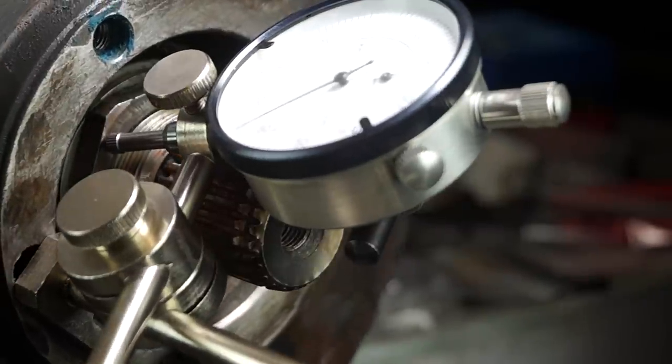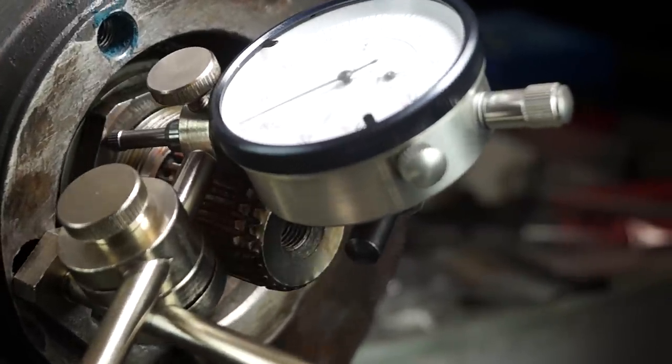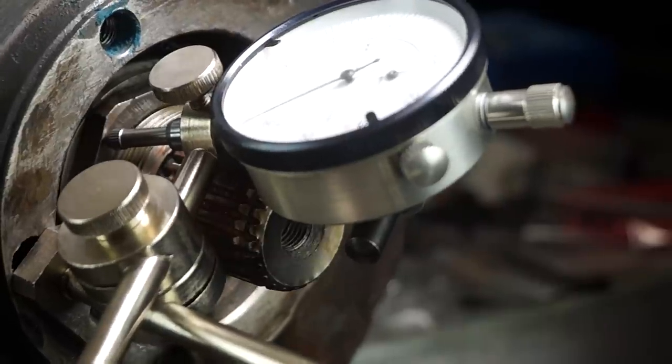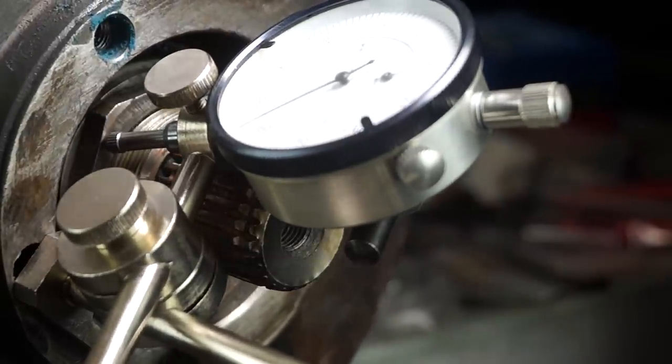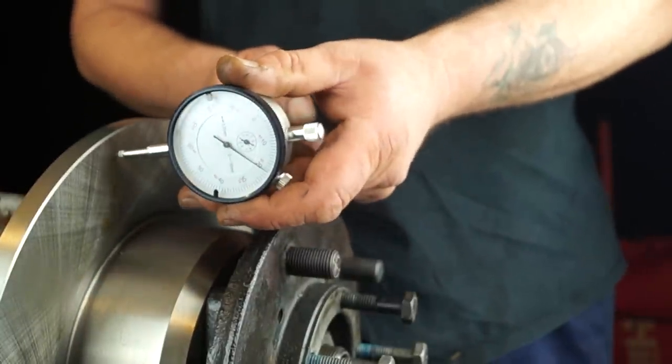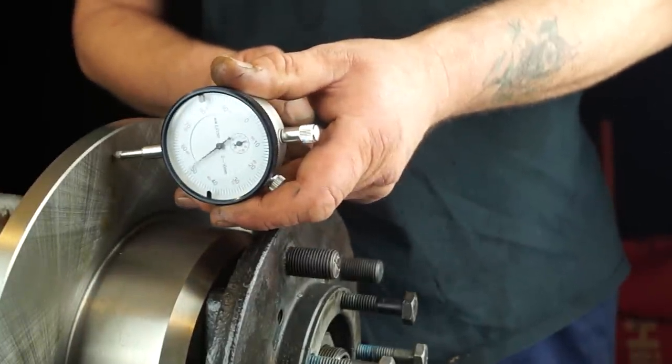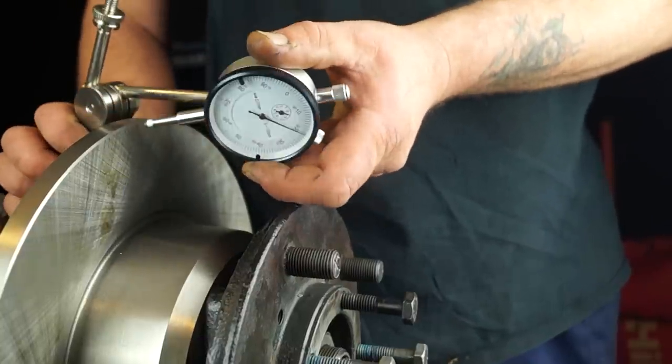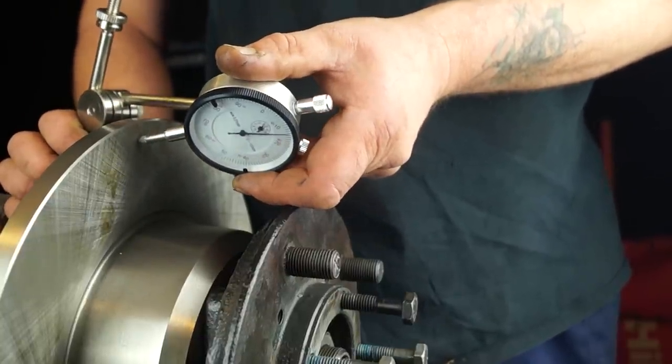For measuring and setting the end float on the hub, you'll need to bolt it to the hub and then have the stylus in a loaded position onto the adjuster nut. When I mean loaded, I mean that the stylus needs to be pushed in so it will counteract the minus movement as well as the plus movement.